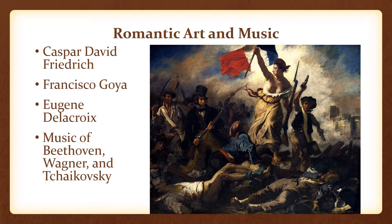Romantic music placed a strong connection with emotion as well as nationalism, conveyed through the use of national folk songs. Beethoven was somewhat of a transitional figure between the classical and Romantic eras. He was one of the first composers to convey inner human emotion through music, and many of his later works were written when he was deaf. He was also the first composer to incorporate vocal music in a symphony.